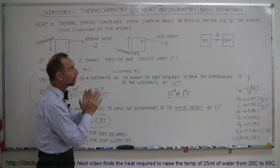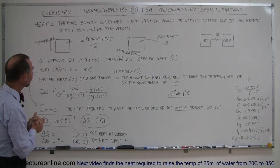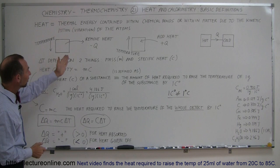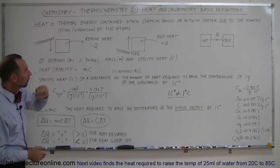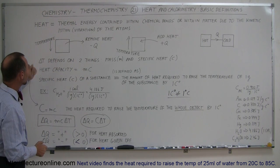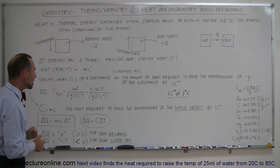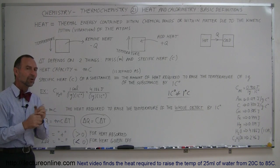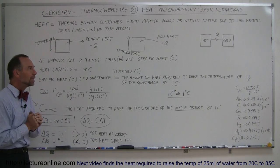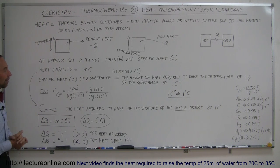Then we can calculate things such as the specific heat of the object or the amount of heat given off by a reaction — we'll deal with that in the next few videos. So this gives us the basic definitions of heat, calorimetry, temperature, heat capacity, and specific heat, and we now have all the tools we need to go ahead and look at the upcoming videos.